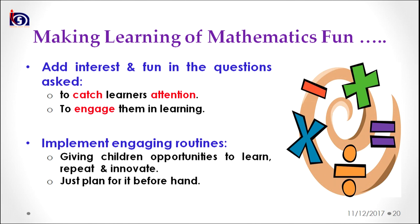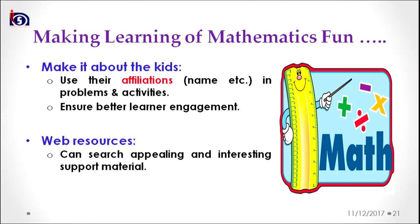Implementation of engaging rules can be considered as another strategy. Giving children opportunities to learn, repeat, and innovate is essential, and as a teacher you are required to plan for this beforehand. Whenever teaching mathematics, we should use children's affiliations — such as their names — when chalking down or framing problems and activities. The use of affiliation ensures better learner engagement with the task of learning mathematics.